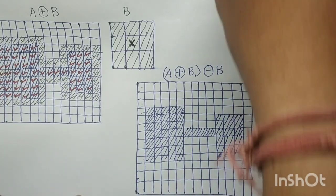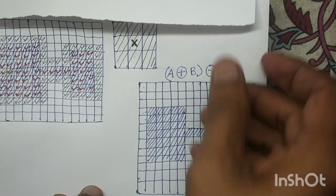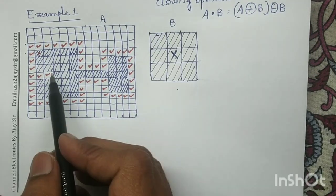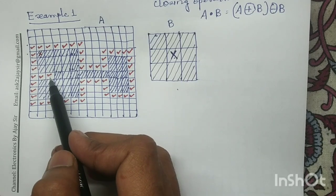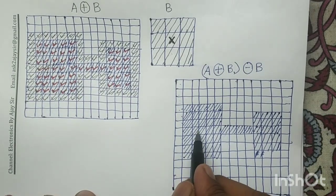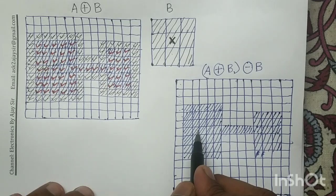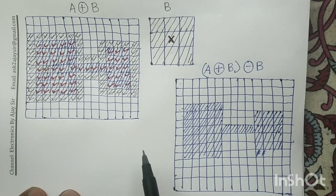If you compare the result of the closing operation with the given input image, in the given input image you can see in object 1 there are two pixels which may be considered as part of the internal noise. After performing the closing operation, those two pixels which were earlier part of the background pixels — the internal noise — become part of the object pixels. Hence, the internal noise present in the object pixels has been mitigated after performing the closing operation.